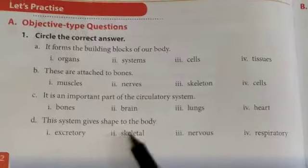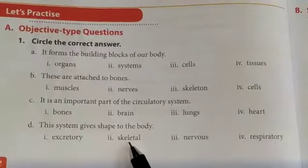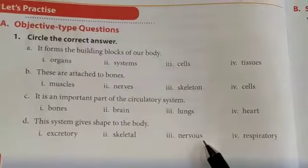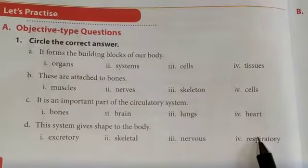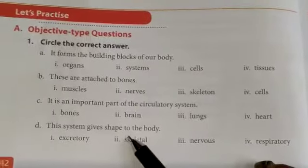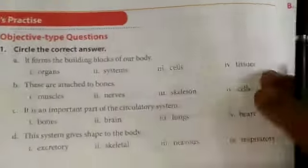This system gives shape to the body. Options: Excretory, Skeletal, Nervous, Respiratory. Circle the skeletal.